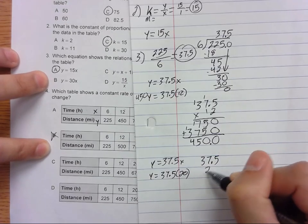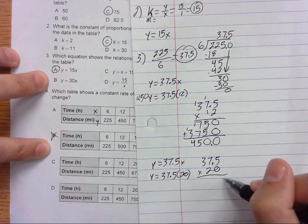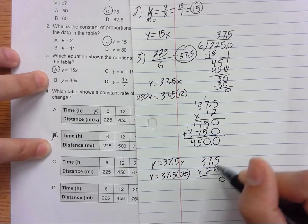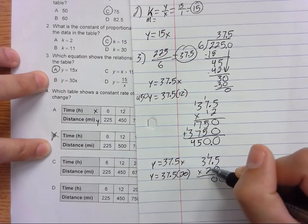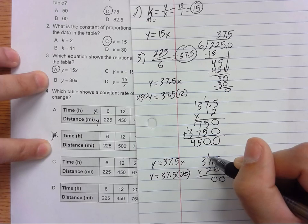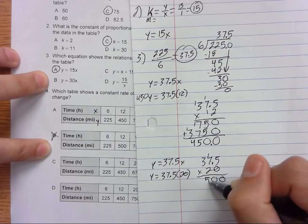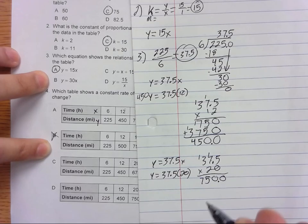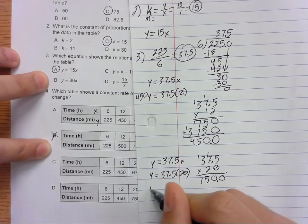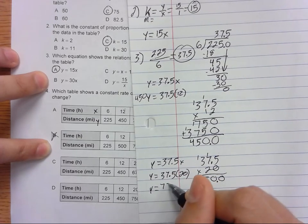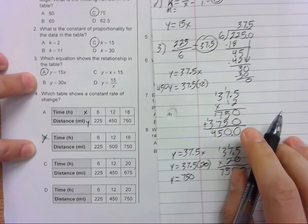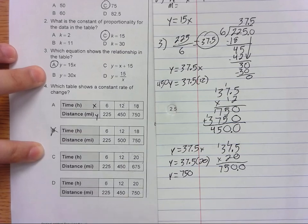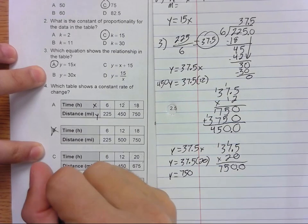So 37.5 times 20. I'm just going to throw that 0 in right away. We'll bring this 0 straight down. 2 times 5 is 10. 2 times 7 is 14 plus 1 is 15. 6 and 7. Move the decimal over once, so Y equals 750 when X is 20. Y equals 750. So the answer to 4 has to be D.